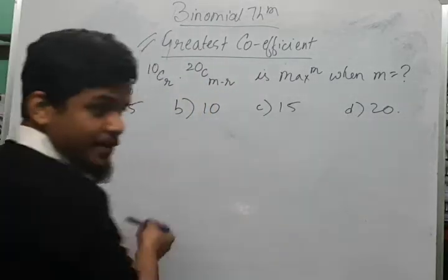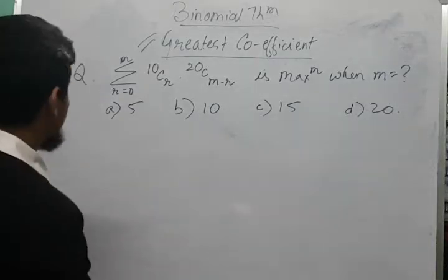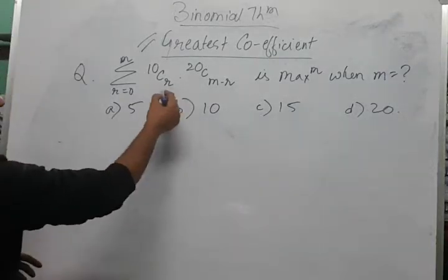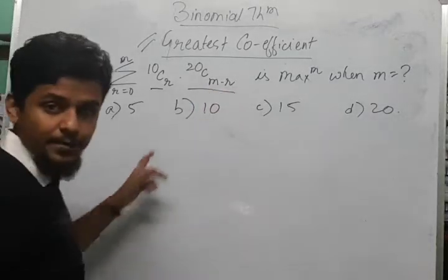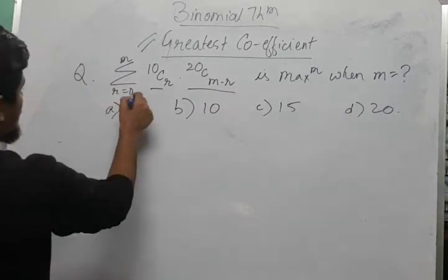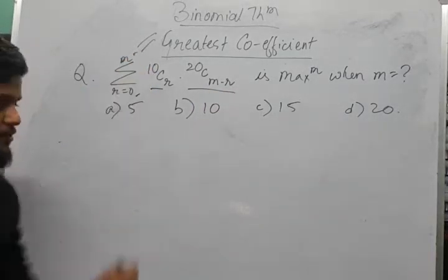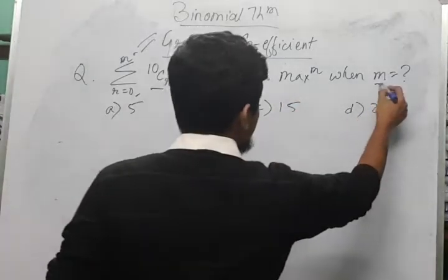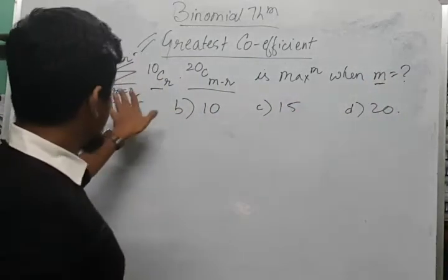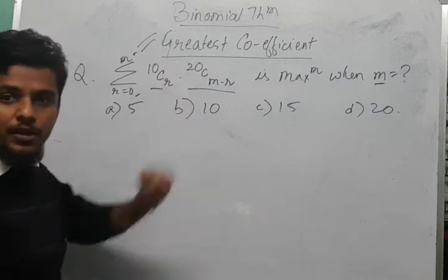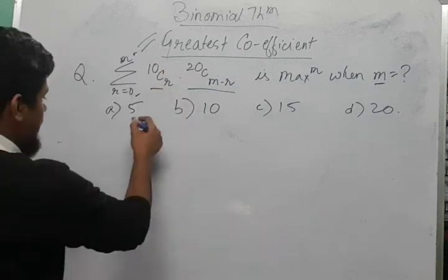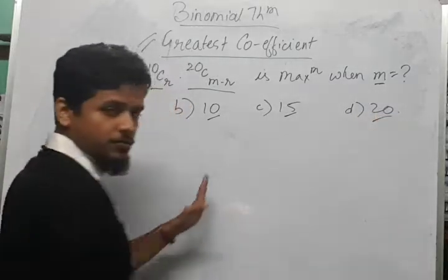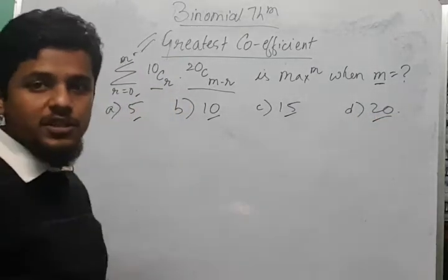The question that we have here is fairly straightforward. We have the summation of 10Cr into 20C(m-r), where r goes from 0 to m, and this summation is maximum where m is equal to — we need to find out the value of m for which the expression is maximum. Option A is 5, option B is 10, option C is 15, and option D is 20.